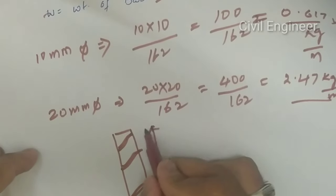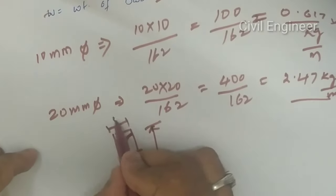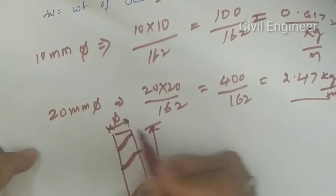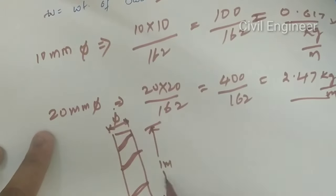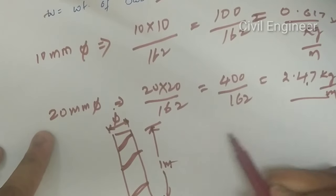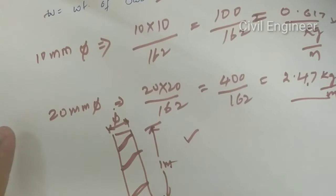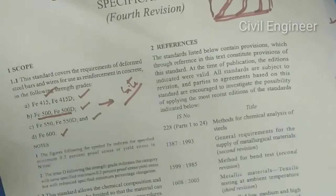For example, we will calculate a 1-meter bar. In 20mm diameter bar, it is 2.47 kg. So I will calculate it all by the sand and cement. The quantity will calculate everything.